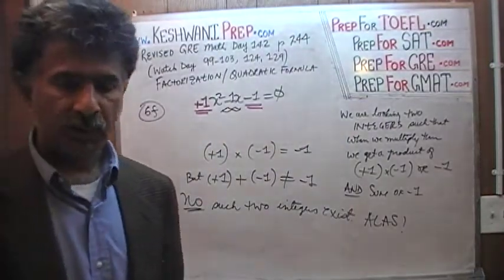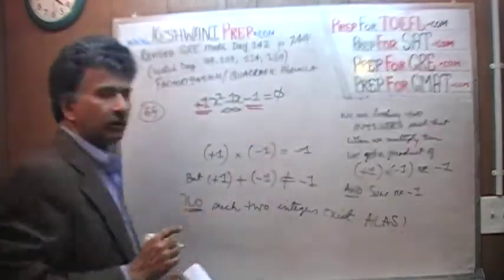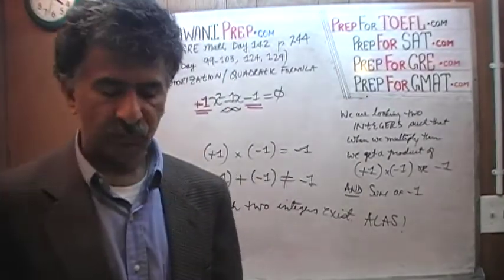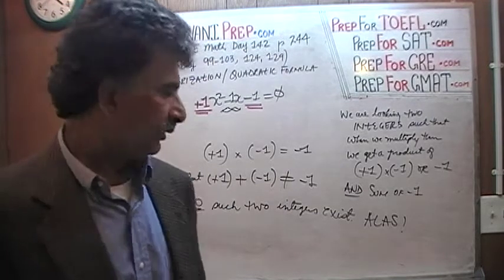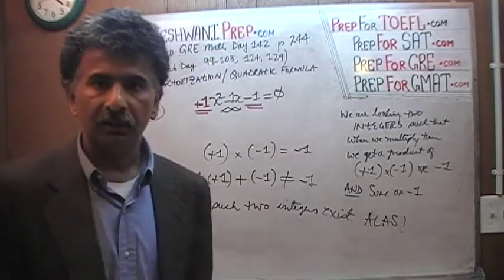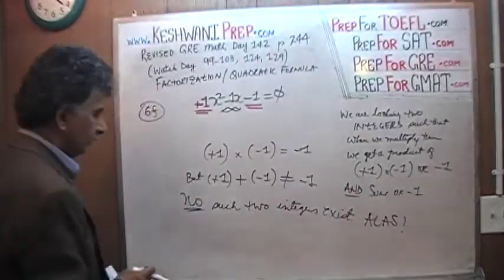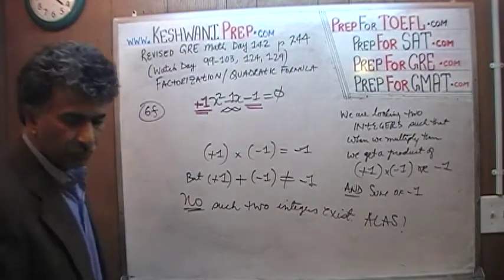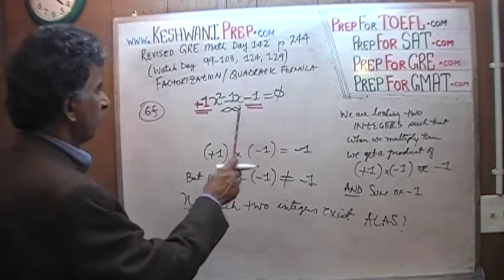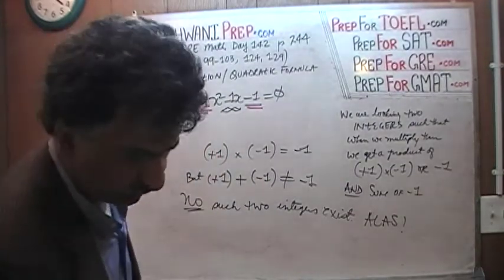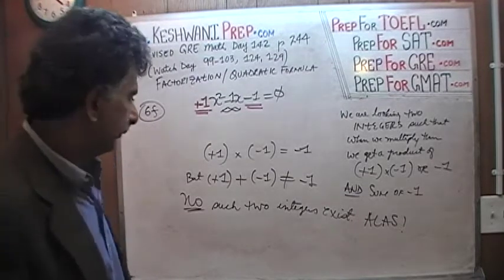We have no choice but to employ the quadratic formula. I hate using it because you have to memorize it, but you must know it for the exam because some problems require it and factorization won't work. There are no two integers which give us both a product of negative 1 and a sum of negative 1. Because if the product is negative 1, the integers must be positive 1 and negative 1, and their sum will be 0, not negative 1.